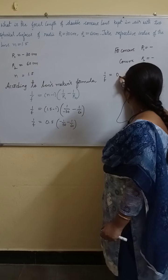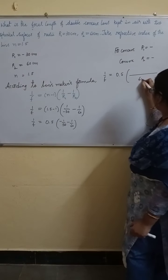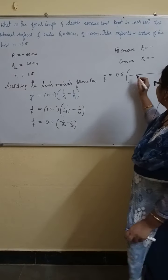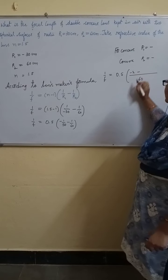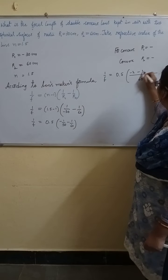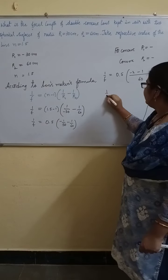1 by F is equal to 0.5 into LCM 60. In 30 table, 60 will come for 2 times. 2 into 1, 2 minus. In 60 table, 60 will come for 1 time. 1 into 1, 1. 1 by F.